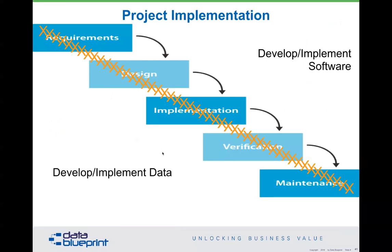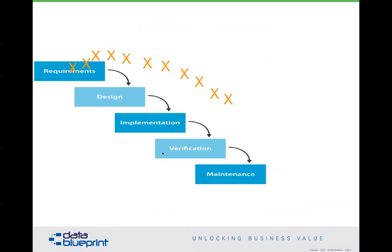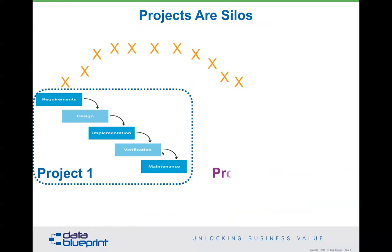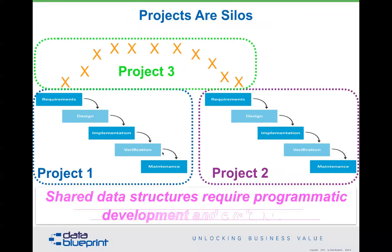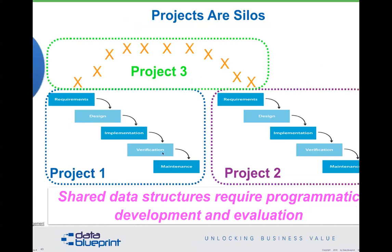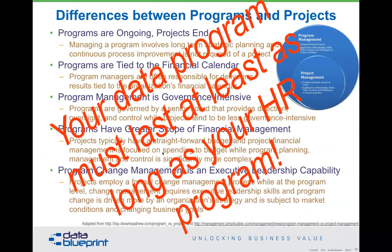Shared data requirements require programmatic development and evaluation. The programs versus projects difference is critical — your data program must last at least as long as your HR program. Our sixth deadly sin is the lack of qualified data leadership. Data as a subject is very complex, detailed, taught inconsistently, and poorly understood, which means nobody wants to hear what you're doing, which means data decisions are very difficult to get airtime at the board level — and that's really where many of these subjects need to be addressed.